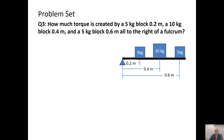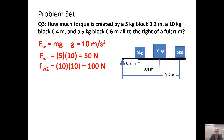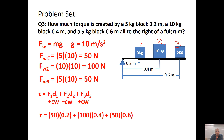Problem 3: How much torque is created by a 5-kilogram block 0.2 m away, a 10-kilogram block 0.4 m away, and a 5-kilogram block 0.6 m away? They all cause clockwise torque, so all values are positive. Converting: 5 kg = 50 N, 10 kg = 100 N. Weights act straight down, so they're already perpendicular. Adding all torques: the result is 80 newton-meters clockwise.